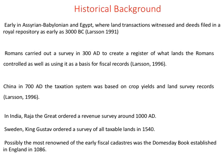In China, around 700 AD, the taxation system was based on crop yields and land survey records. In India, rajas and maharajas ordered surveys for revenue purposes around 1080 AD. This was also followed in Europe by King Gustav of Sweden, who ordered all taxable land to be surveyed and taxed in 1540 AD. Possibly the most renowned early fiscal cadastre was the Domesday Book, established in England in 1086.